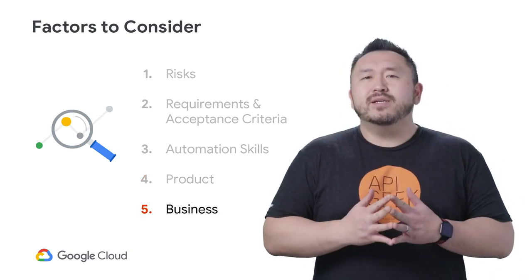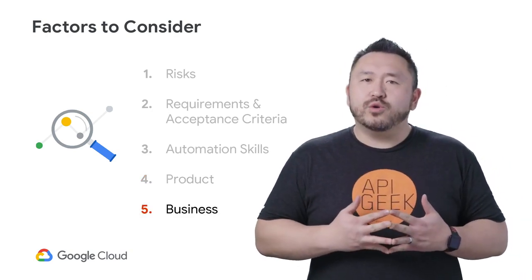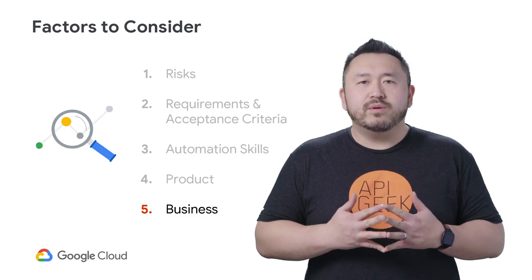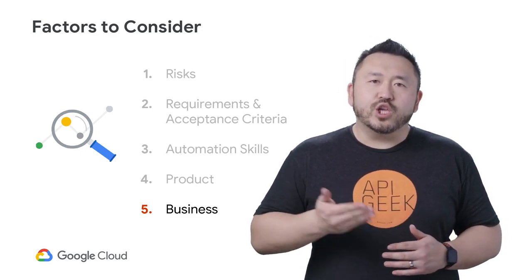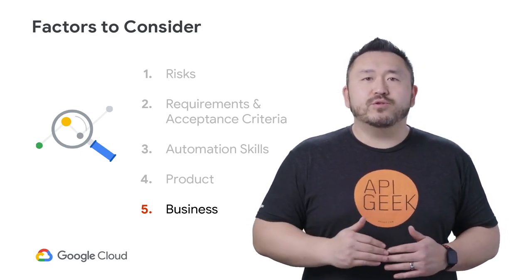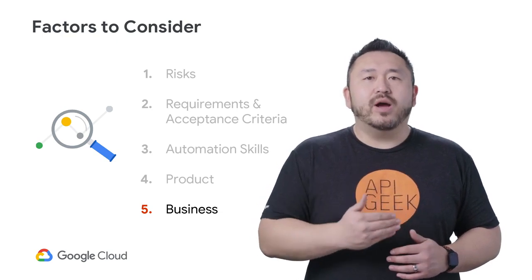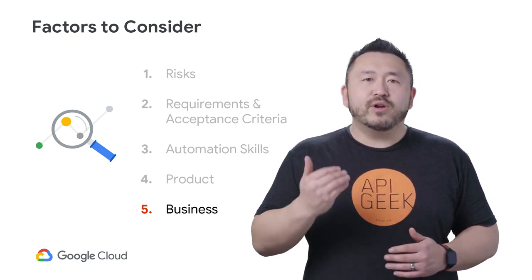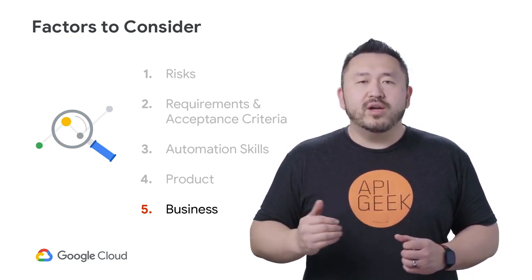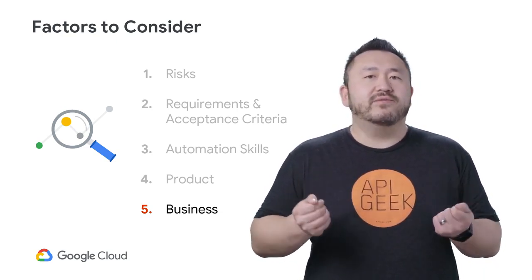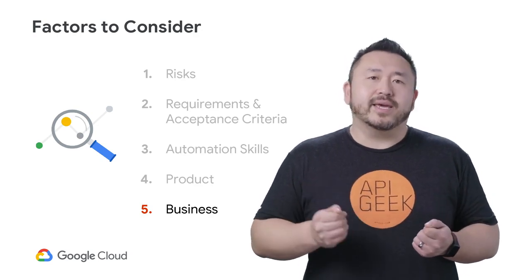The business must support a culture of quality assurance and continuous improvement as well. This means including QA further upstream in the requirements and design process, and also collaboration between the product owner and the QA team to mutually define acceptance criteria and test cases.